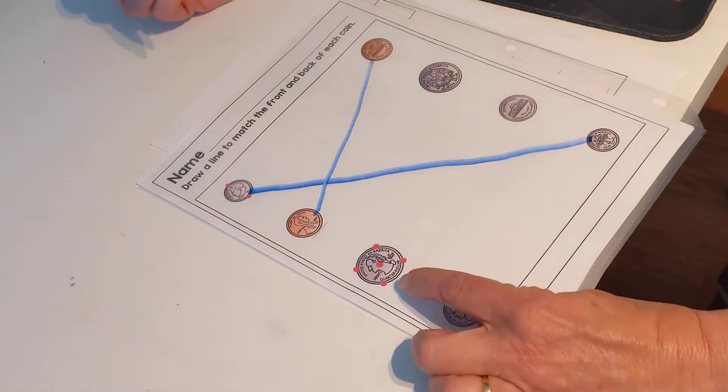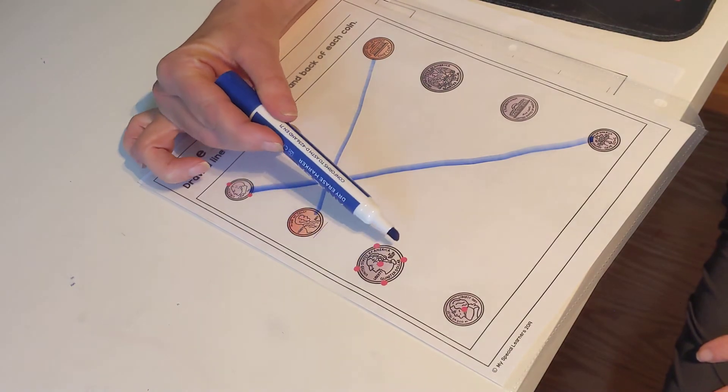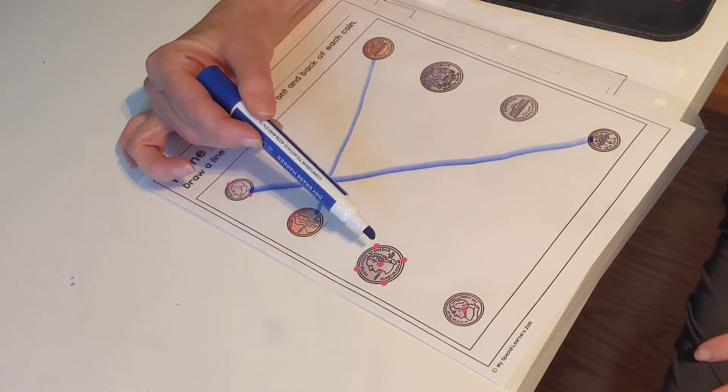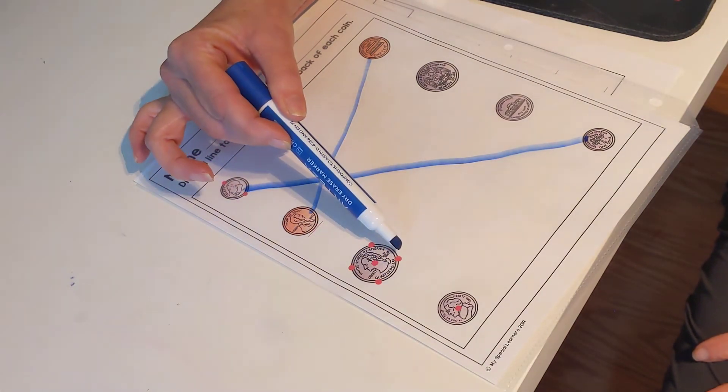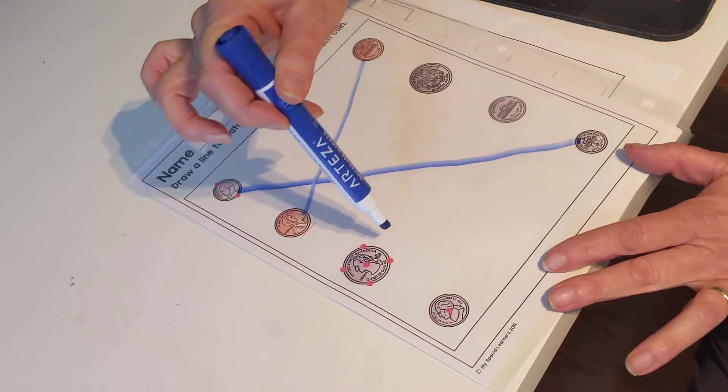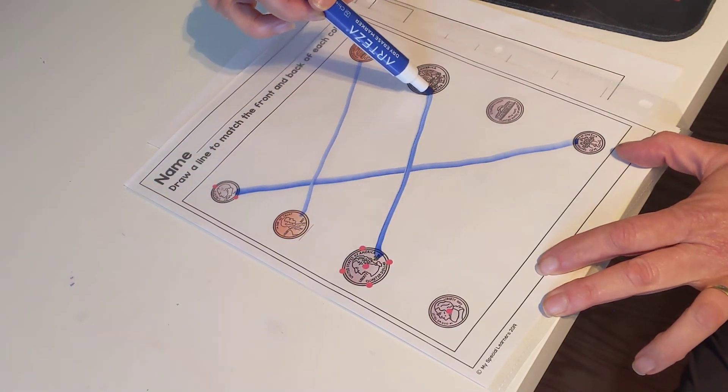Excellent. Here again, you have the quarter. Five, ten, fifteen, twenty, twenty-five. Twenty-five cents. Front of the quarter to the back of the quarter.